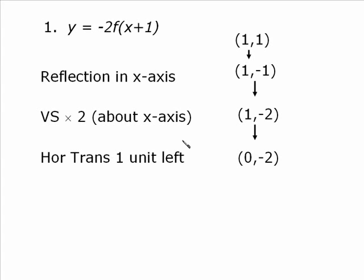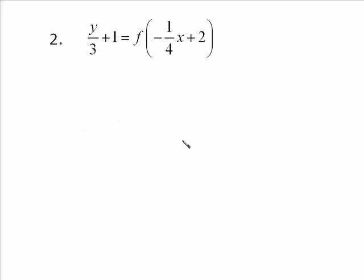Let's take a look at another one. This one's more complicated. Same point 1 comma 1, but here we have y over 3 plus 1 equals f of negative 1 quarter x plus 2. We really need to clean this one up first.